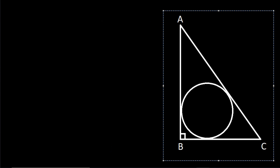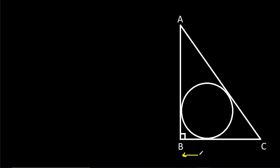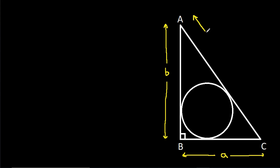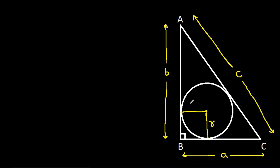Suppose BC is a, AB is b, AC is c, and suppose the radius of the circle is R. Suppose the centre of the circle is O, this point is P, and this point is Q.